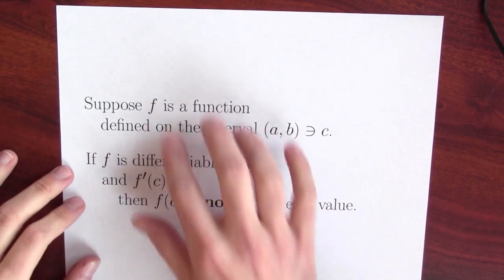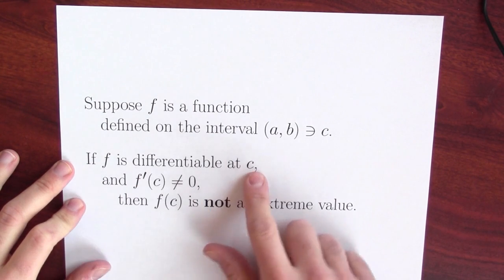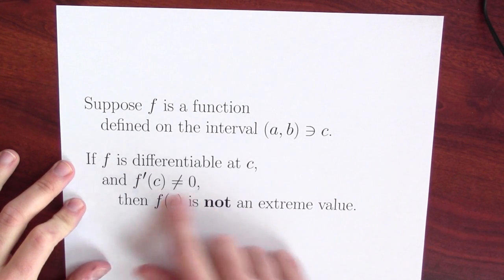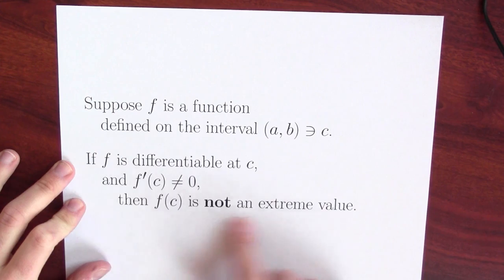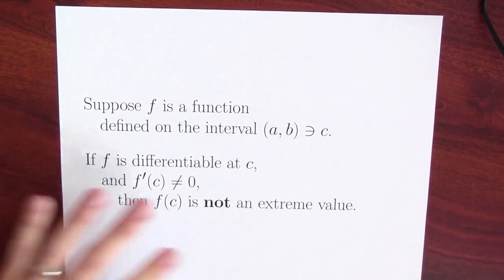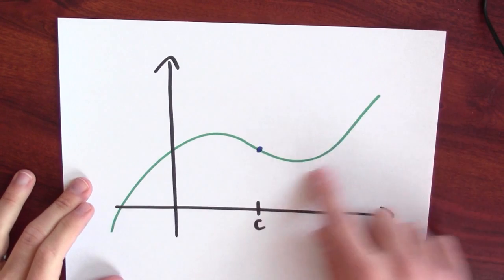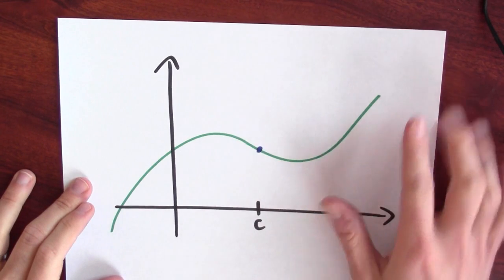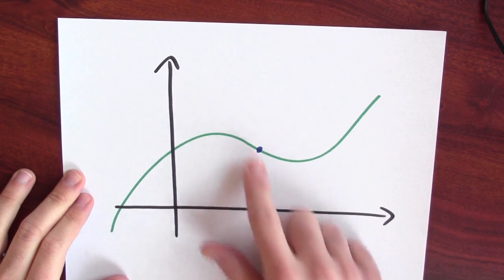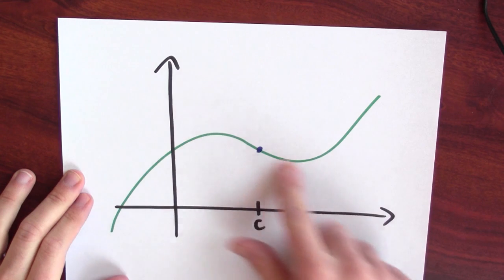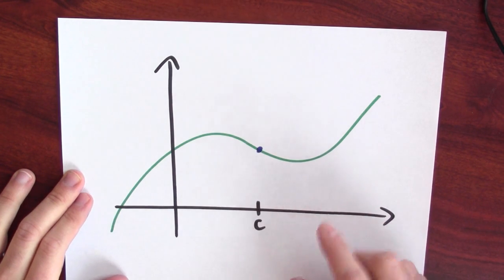I want to get some intuitive idea as to why this is true. Why is it that if you're differentiable at a point c with non-zero derivative there, then f of c isn't an extreme value? To get a sense of this, let's take a look at this graph. Here I've drawn a graph of some random function. I pick some point and f prime of c is not zero — differentiable there, but the derivative is non-zero. It's negative.